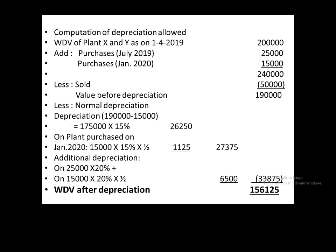Written down value of plant X and Y as on 1-4-2019 is 2 lakh. We add two new plants purchased: July purchase 25,000 and January purchase 15,000, totalling 2,50,000. Plant Y has been sold for 50,000, so after deducting that we get 1,90,000 as the value before depreciation.